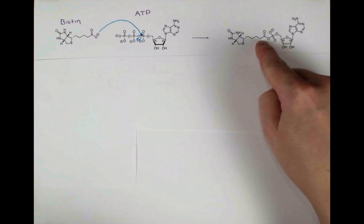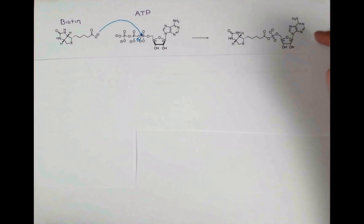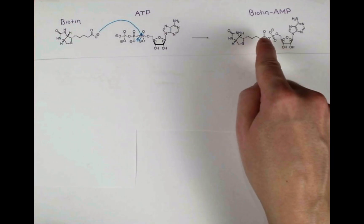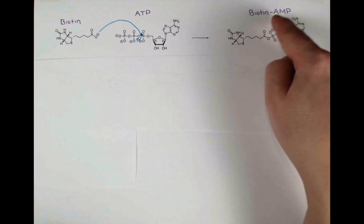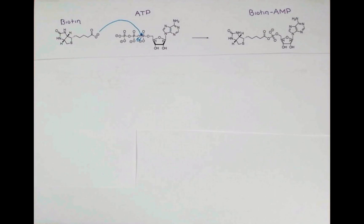And now our carboxylate has formed an anhydride linkage, and it has the whole AMP piece attached. The carbonyl of this anhydride is much more easily attacked now by a lysine on the enzyme, because this is a great leaving group. Let's look at that process now.